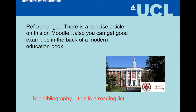In all academic writing, it's important that there's very clear referencing of the articles you use. There's a concise article on this on Moodle, and you can also find good examples in the back of a modern education textbook — how a journal article is handled, how a web-based reference is handled with the date of access. We operate with a Harvard referencing system. At the end of your writing, you'll put a list of all references used — not a bibliography, which is a reading list. We expect to see a section headed 'References'.